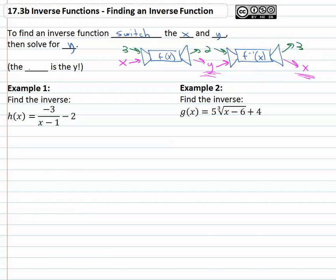Now one important thing to note is the notation f of x, g of x, h of x, that represents the part that is y. So if we see h of x equals negative 3 over x minus 1 minus 2, we need to think about that as y equals negative 3 over x minus 1 minus 2.